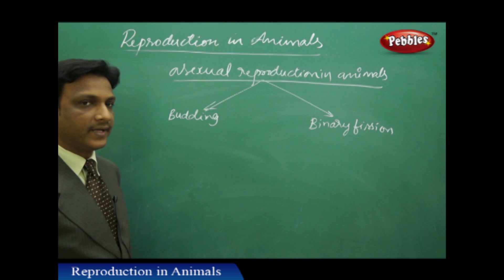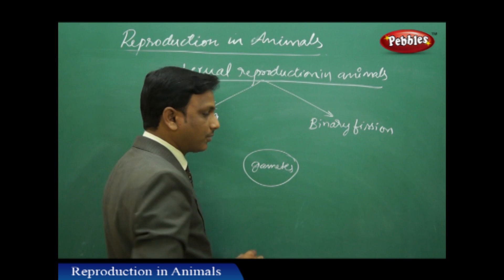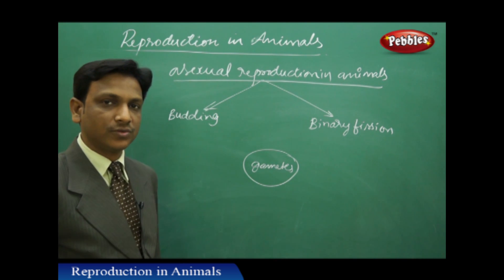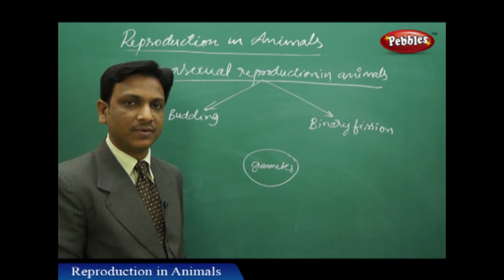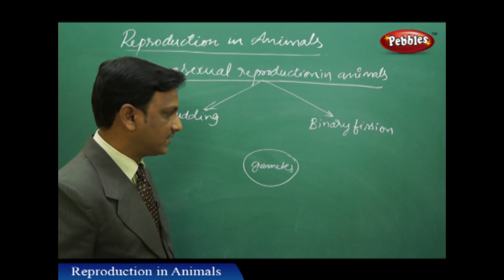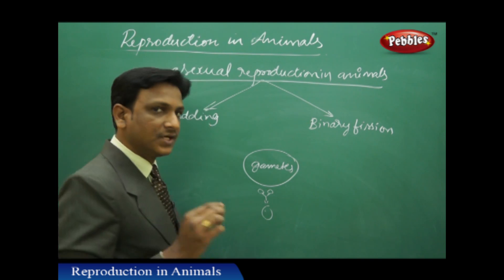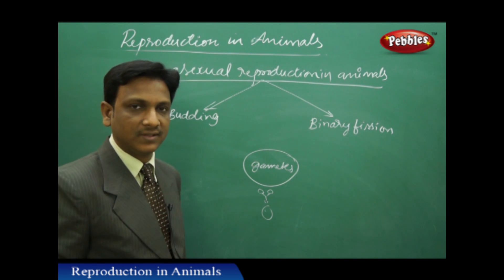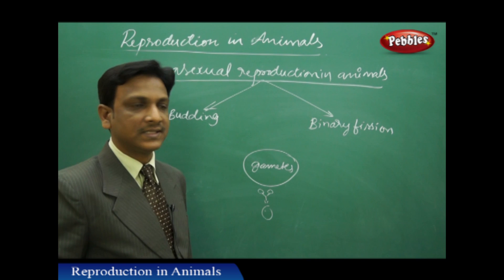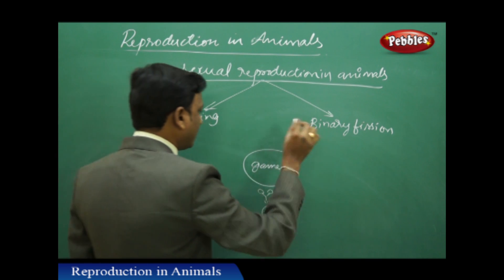Certain animals are not able to produce gametes. Gametes are the reproductive cells that play an important role in sexual reproduction. The male gamete is produced by the male reproductive system, and the female gamete is produced by the female reproductive system. Both gametes fuse together to form a zygote, which leads to the formation of a baby — that is sexual reproduction. But certain animals are unable to produce gametes, so asexual reproduction takes place in the form of budding or binary fission.